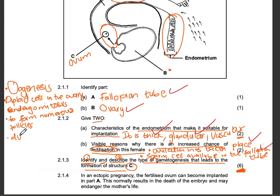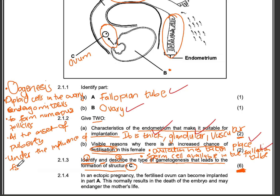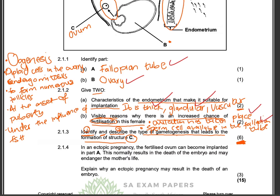At the onset of puberty, under the influence of FSH — the follicle stimulating hormone, secreted by the pituitary gland — FSH will stimulate one of the follicles to start enlarging and undergoing meiosis.